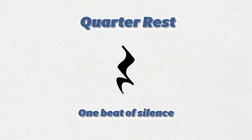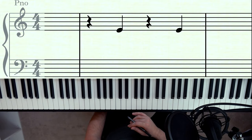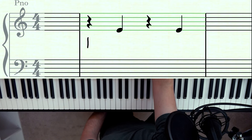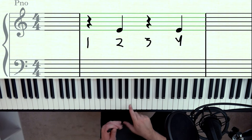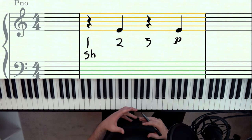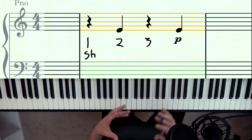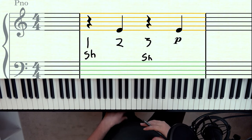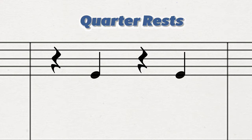This is a quarter rest, and it gets one beat of silence. One option when counting quarter rests is to just say the number and not play anything, then come in on the next beat. Or you can use the syllable 'shh' to fill in the gap, so you'd count: shh, two, shh, four.